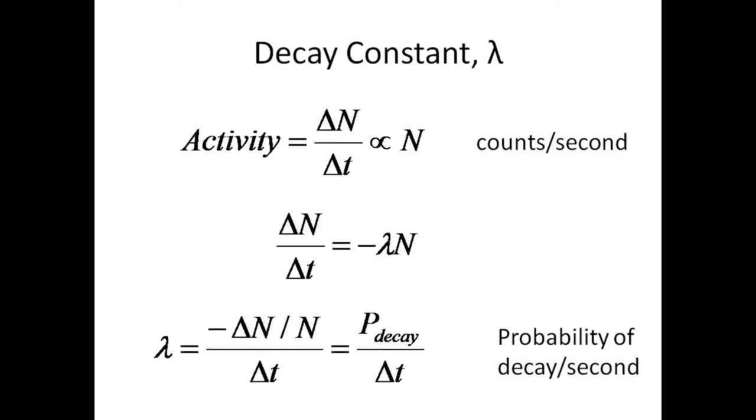The negative in the proportion just indicates that the numbers are dwindling rather than growing. If the likelihood of a given nucleus decaying in a given second is small, then lambda represents the probability of that nucleus undergoing a decay each second.